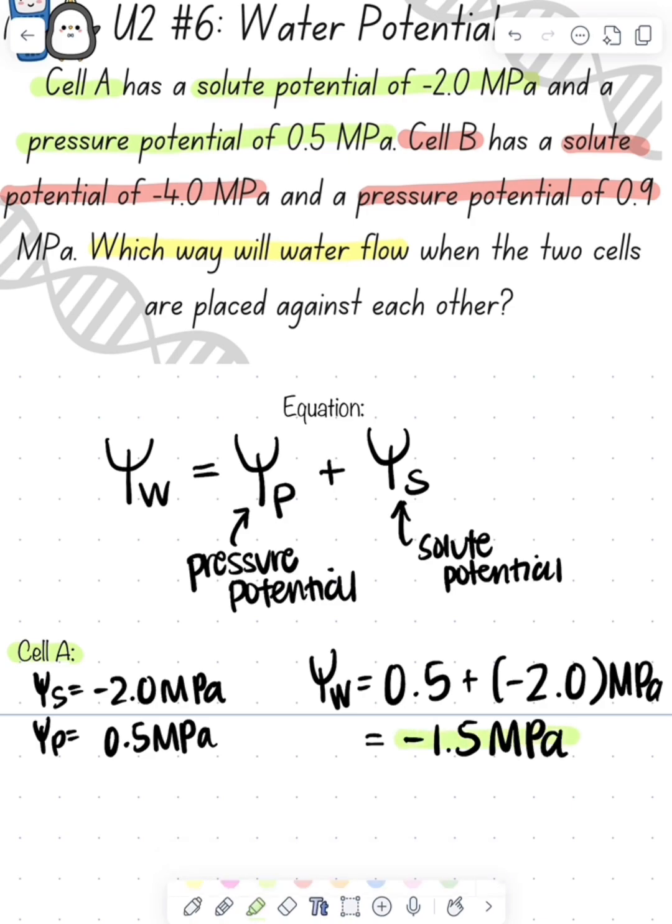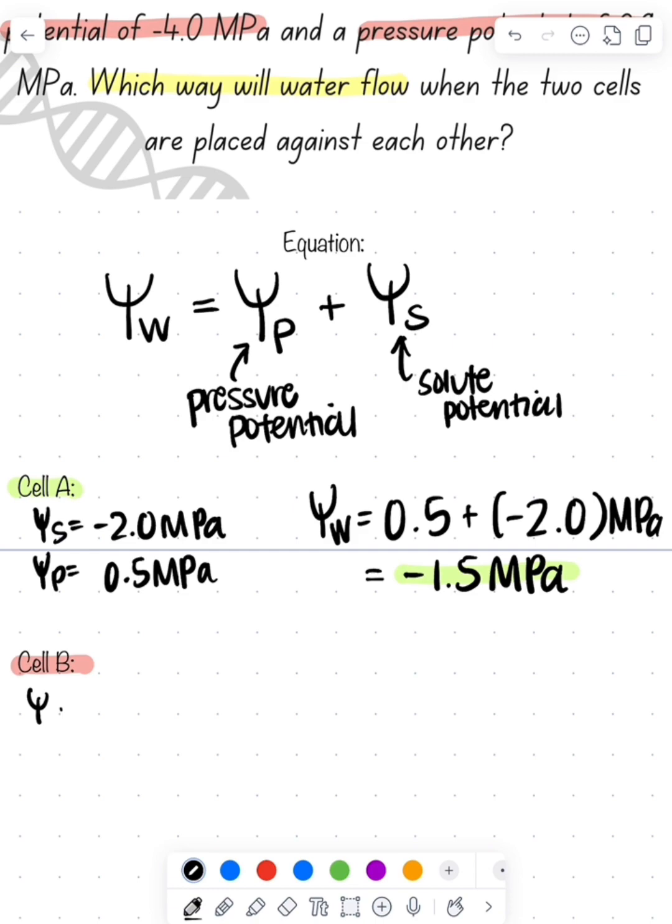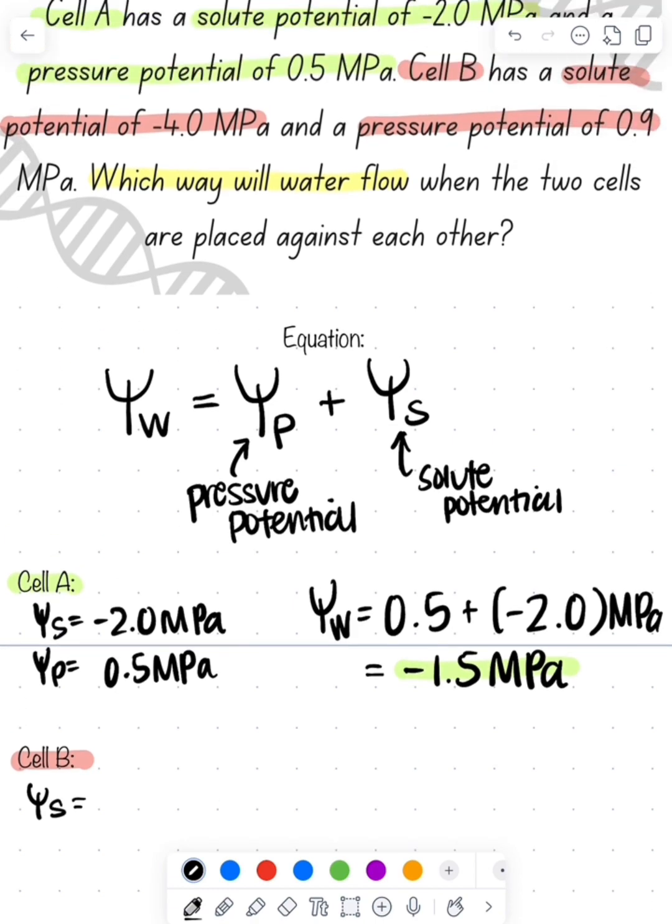Now for cell B. Again, we've got to take inventory and figure out what these different values were. Go back to the prompt to look at what those are. We see that the solute potential is negative 4 megapascals and the pressure potential is 0.9 megapascals.